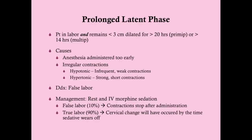Prolonged latent phase means the patient is spending too much time in the latent phase. She is in true labor — she has cervical change, such as effacement — but she remains less than three to four centimeters dilated for more than 20 hours if she's a primapara, or more than 14 hours if she's a multipara. A test question might say she's been two to three centimeters dilated for 18 hours — you'd need to know if she's a G2P1 or G1P0, because for a multipara that's too long, while for a primapara she's still in normal range.